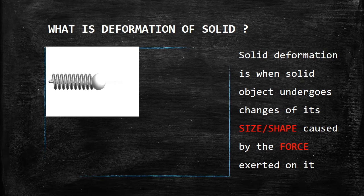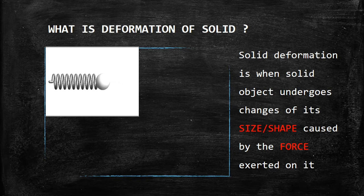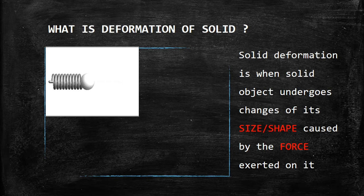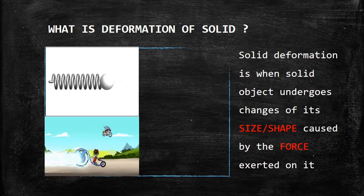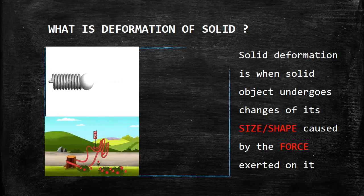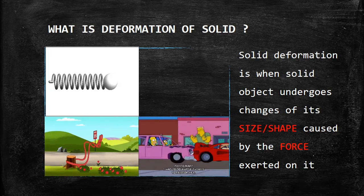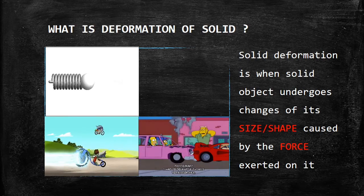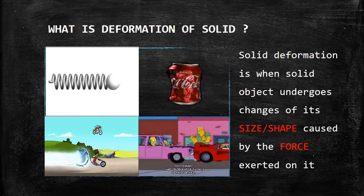Let us take a look at some examples of solid deformation in our daily life. One, the change of length of a spring when it is continuously compressed and released. Two, the stretch of a rubber band. Three, the car's shape is crushed during collision. And number four, a canned coke is being crushed.